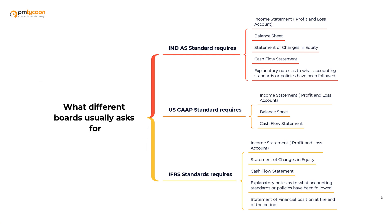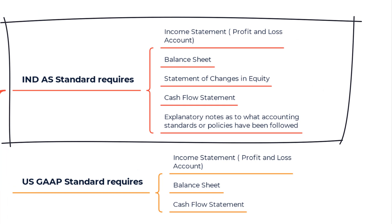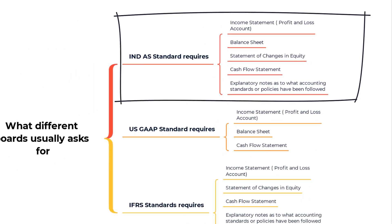There are other reports like the change in shareholder equity, but primarily these three are a must in all countries. For example, the Indian Accounting Standards Board requires companies to prepare: an income statement (also called a profit and loss account), a balance sheet, a statement of changes in equity, a cash flow statement, and an explanatory note on the accounting policies followed.